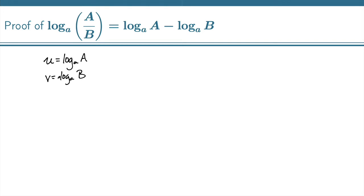Then we can write these two things in exponential form. So a to the u is equal to capital A and a to the v is equal to capital B.